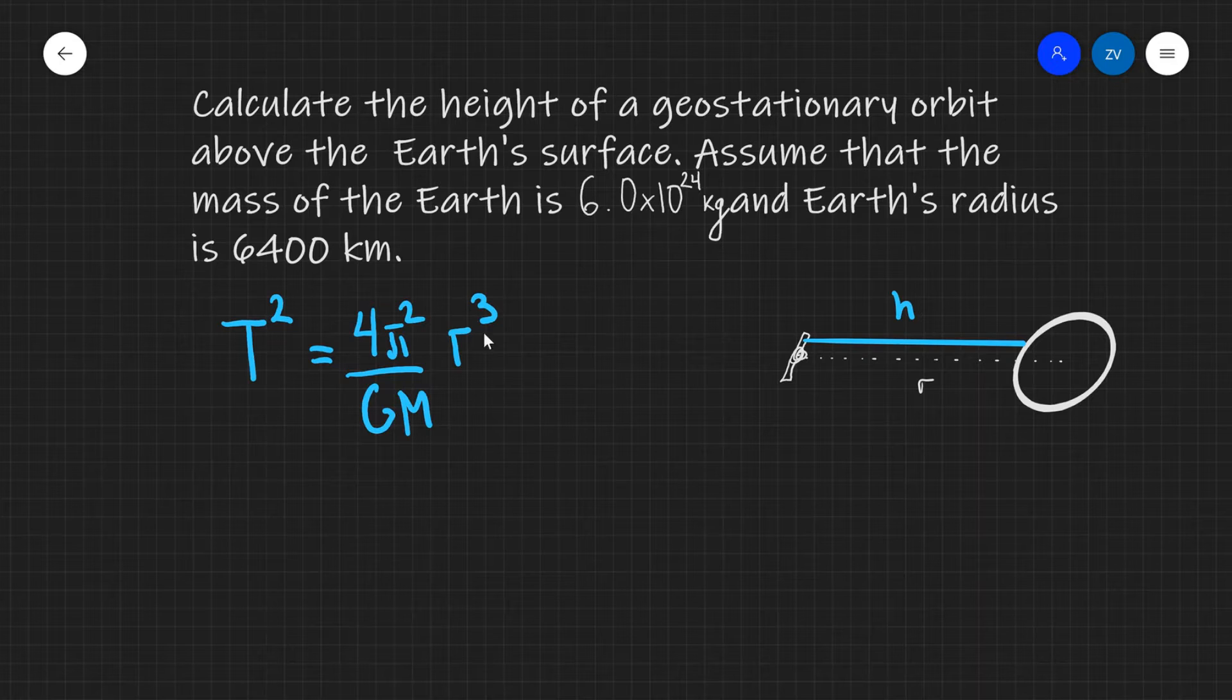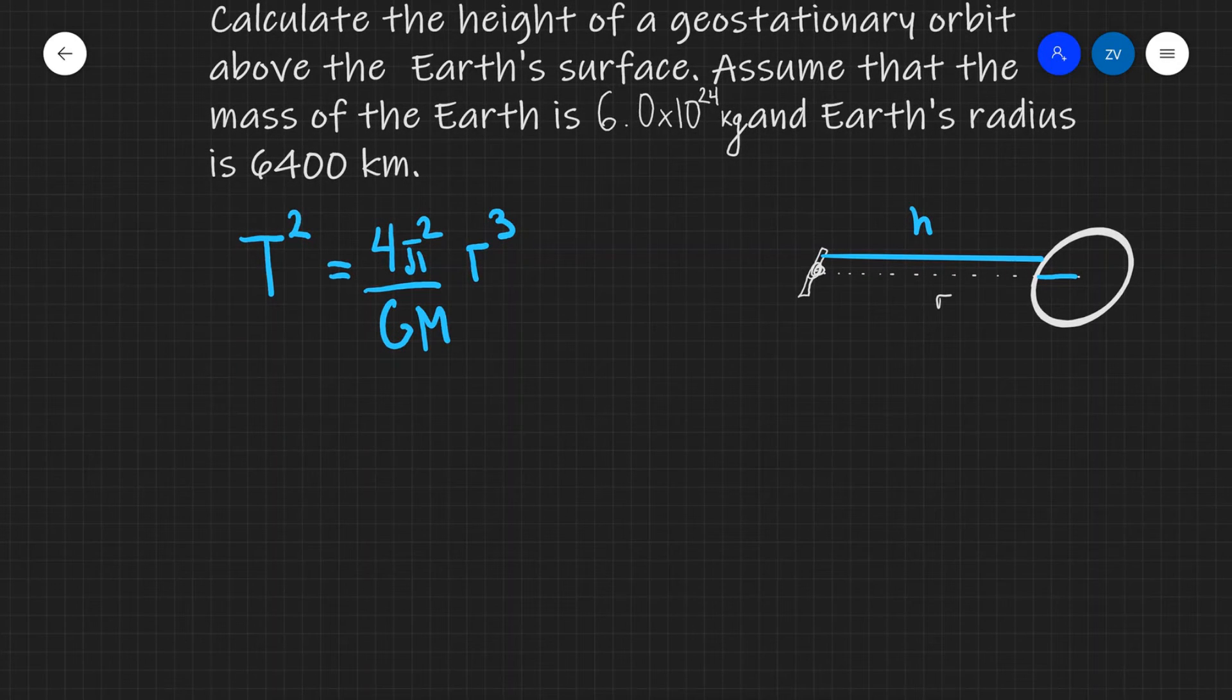Because r in this case, and this is actually a tricky little detail we need to watch out for, is that r is the distance from the satellite to the center of the Earth. So after we find r, we're going to need to take away the radius of the Earth, which is this distance here. But more on that later.